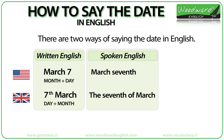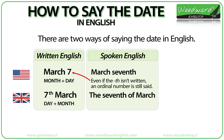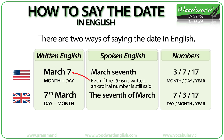Now look at the first date. It is written as March 7th without the TH after the 7. In American English it is not common to put the TH after the number in written English. However, even if it is not written, the ordinal number is still said in spoken English.